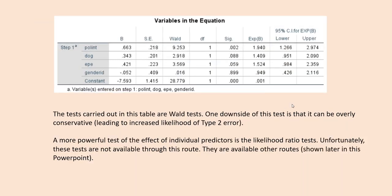This table contains our regression coefficients, standard errors, and test statistics. The test carried out is the Wald test, and one downside is that it can be overly conservative, which can lead to increased Type II error when drawing inferences about population regression slopes. A more powerful test of individual predictors would be likelihood ratio tests, which are unfortunately not available through this route — but I'll show you how to obtain them shortly.